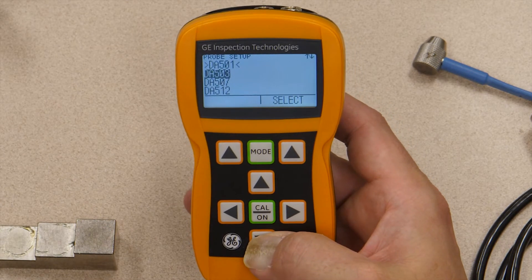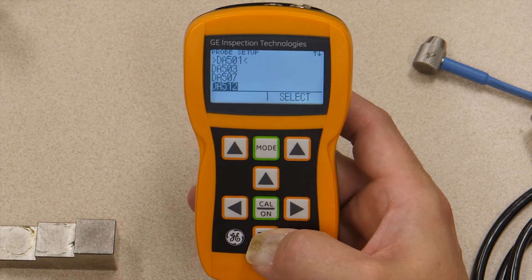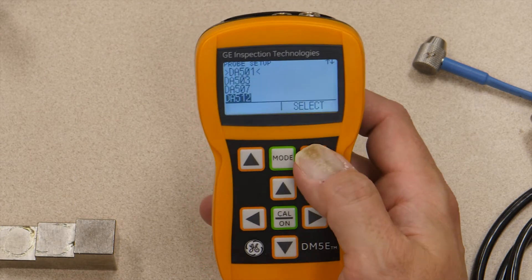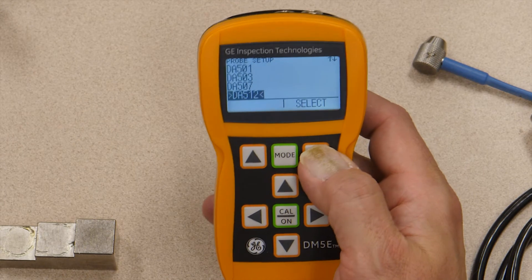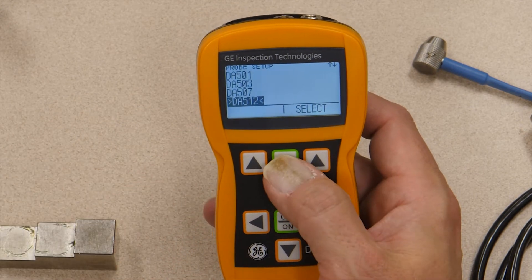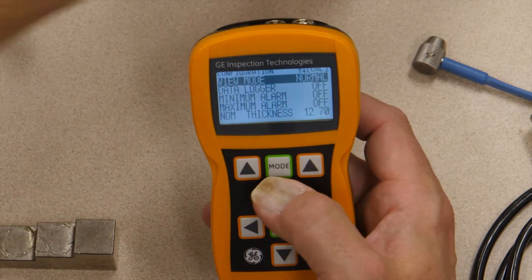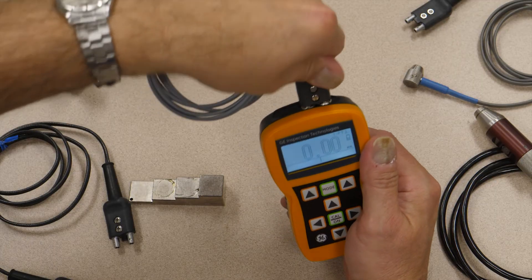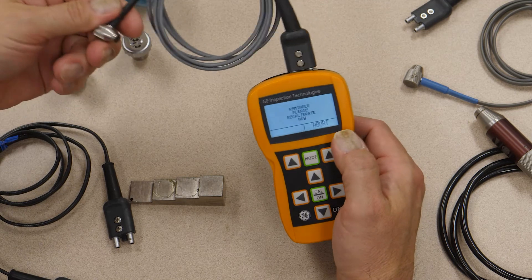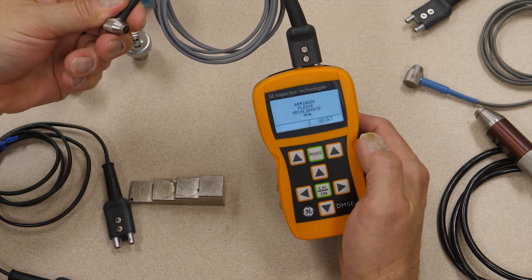So if I were going to use the DA512 probe, for instance, I would scroll down to DA512, press the soft key under select, and now you notice the greater than, less than symbols are down to the DA512. So with that, I can go back to my measurement menu, plug in my DA512 probe, and the first thing it tells me is I need to calibrate.